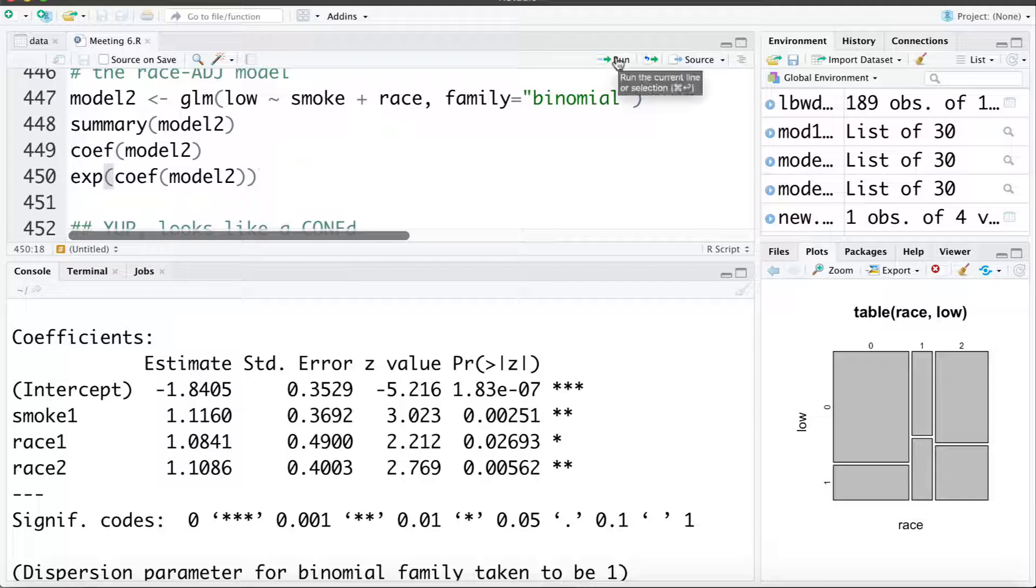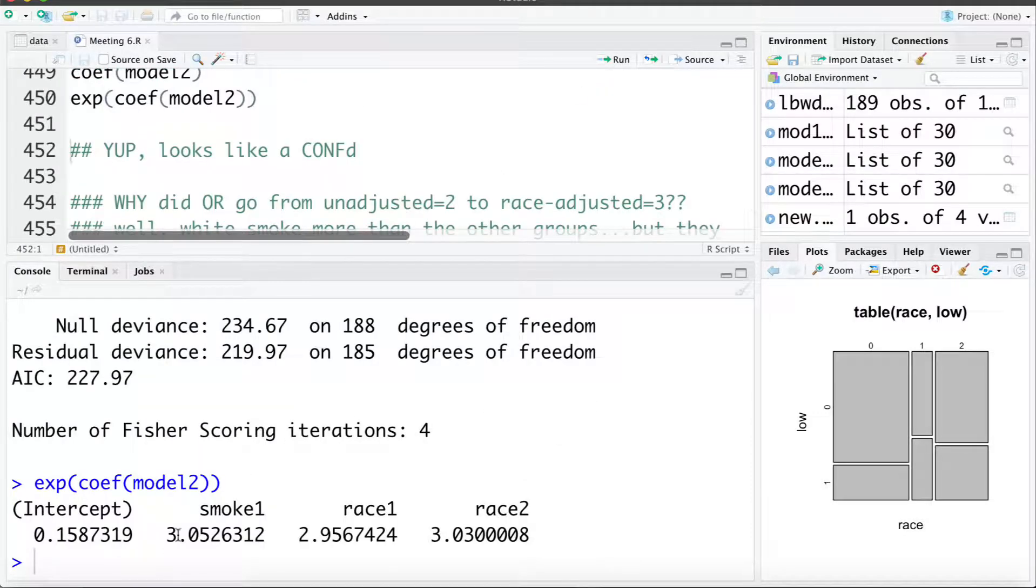And let's just take a look at if we exponentiate the coefficient to get the adjusted odds ratio. We can see here for smoking the adjusted odds ratio is 3.05. Someone who smokes has three times the odds of a low birth weight baby than someone who doesn't smoke adjusting for race category. So again numerically this is meeting all the criteria of being a confounder and conceptually we said that race made sense conceptually as a confounder.